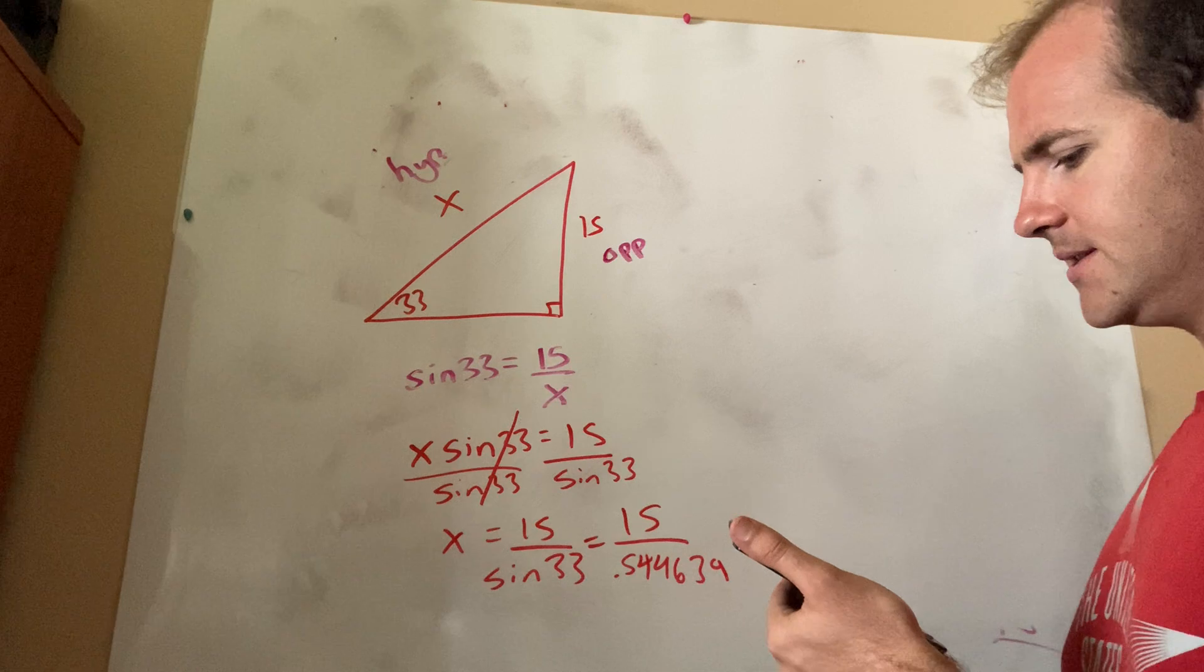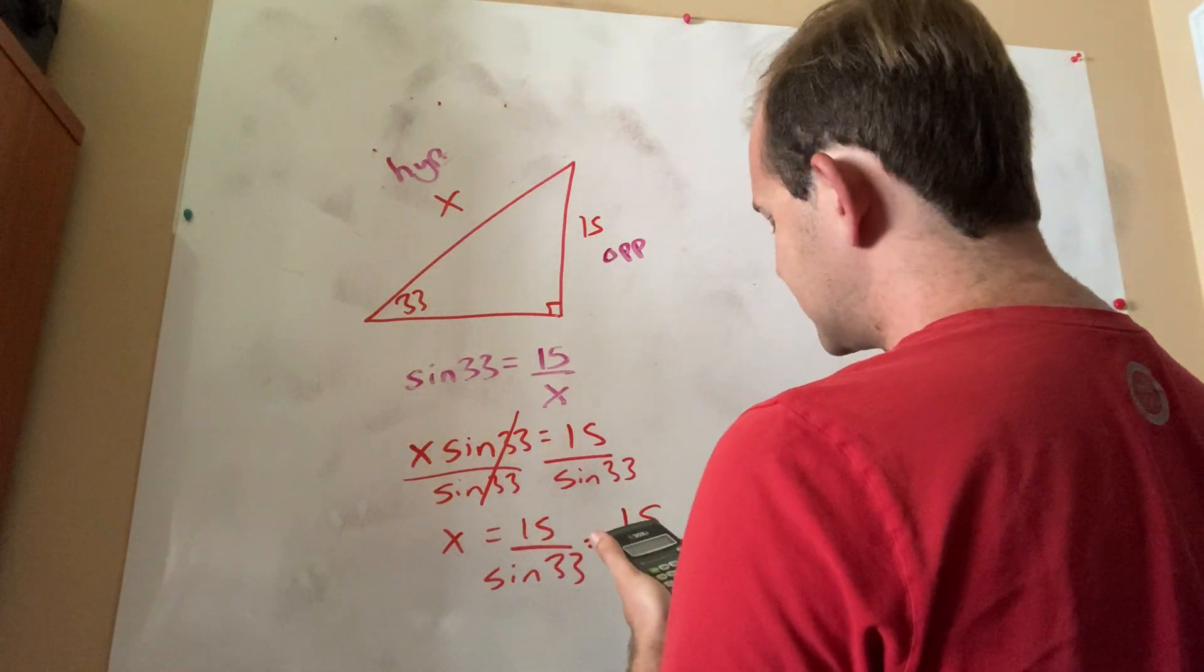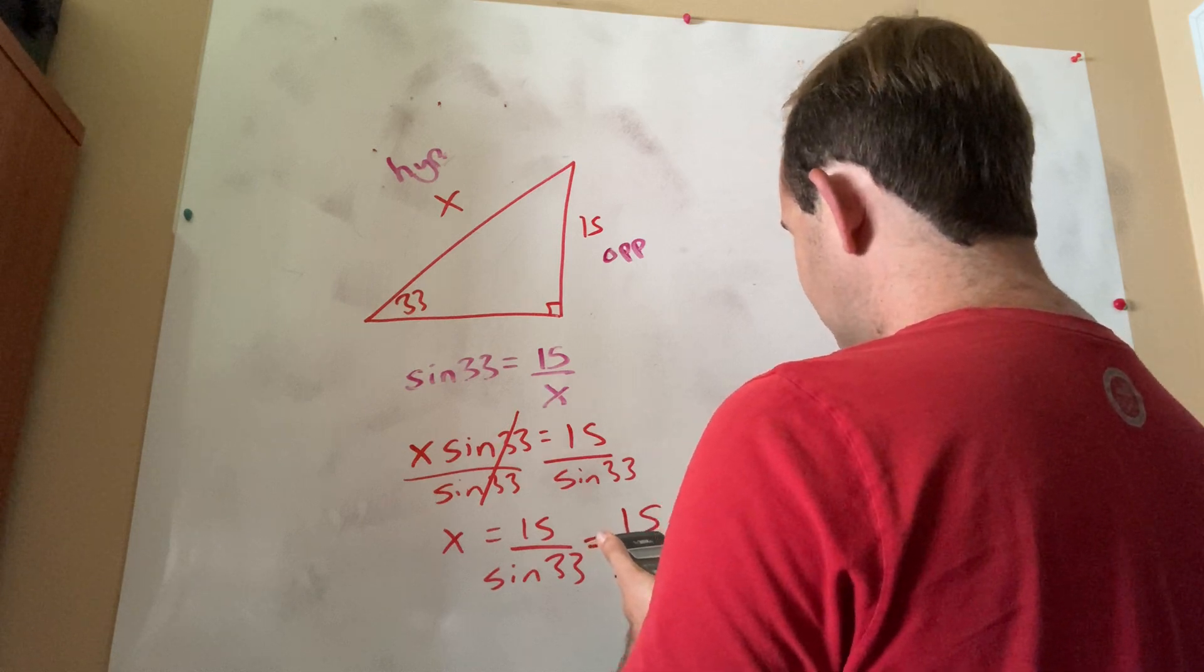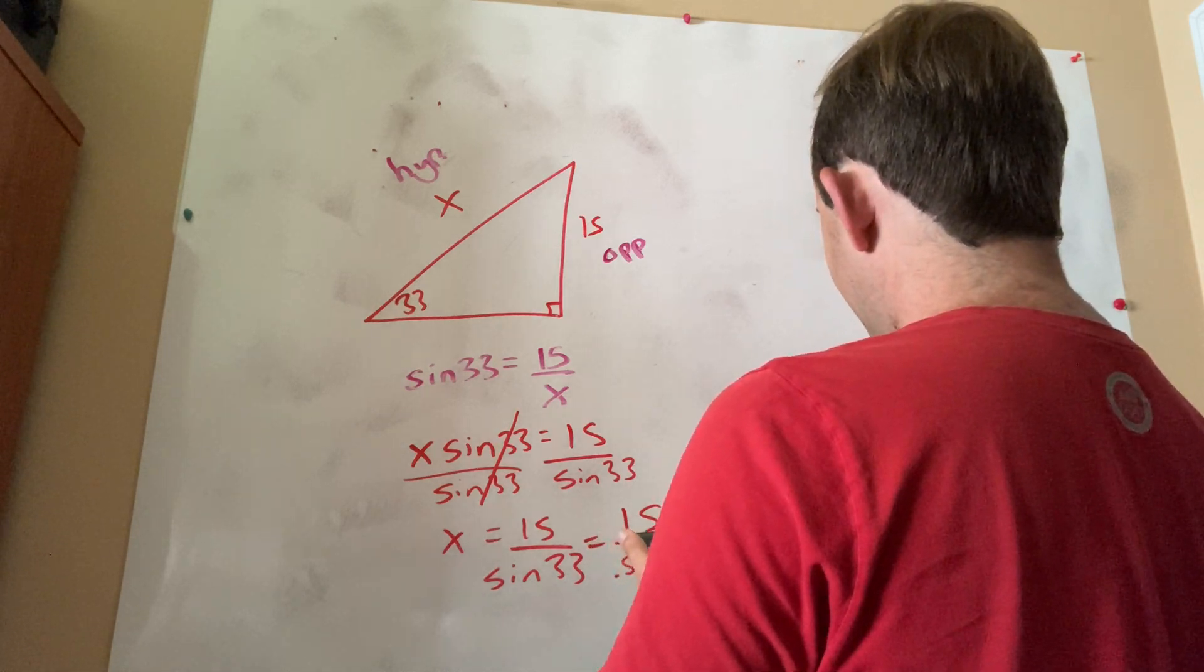And lo and behold, I get 27.54, but 4 is less than 5. So therefore, I'm going to keep it the same at 27.5.